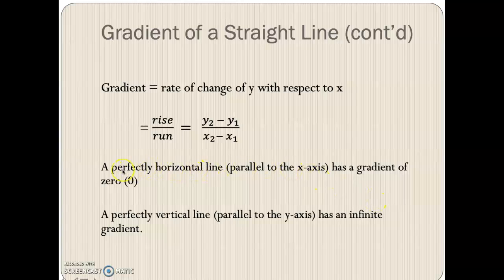Now some facts about gradients. A perfect horizontal line, which is a flat line, and when it's flat, we're saying it's parallel to the X axis. So it's the same shape as the X axis. It has a gradient of 0. And a perfectly vertical line has an infinite gradient.